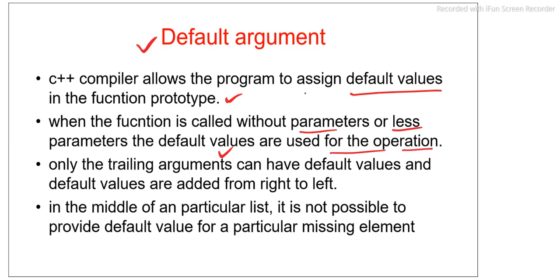One important point to remember is that only trailing arguments can have default values, and default values are added from right to left direction only. For missing values, the assignment goes from right to left from the function declaration. Also, it is not possible to provide a default value for a missing element in the middle of a parameter list — missing element values are replaced from right to left from the function declaration only.